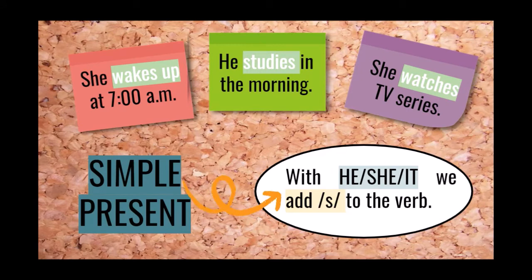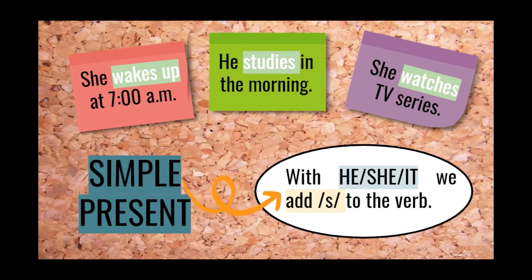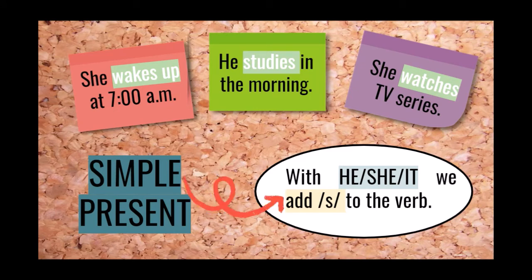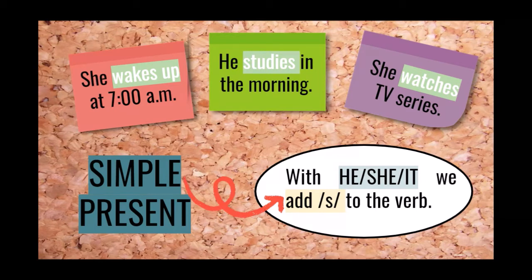With he, she, and it, we are going to add -s to the verb. Take a look at these sentences. She wakes up at 7am — we don't say 'she wake up,' we say 'she wakes up.' He studies in the morning — we don't say 'he study,' we say 'he studies.' She watches TV series — we have a sentence with 'she,' so we say 'she watches TV series.' Pay attention to this!